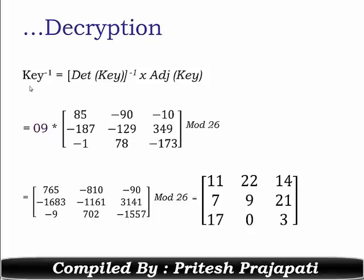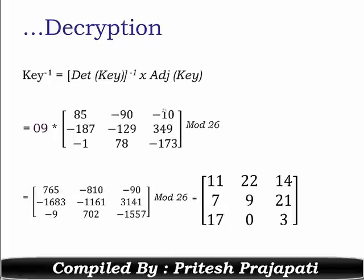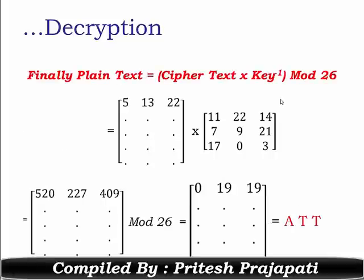The key inverse equals determinant of key inverse into adjoint of key. The determinant of key inverse equals 9, and the adjoint is the step four result matrix. Perform scalar multiplication to get the values, then apply mod 26 to get the key inverse matrix that will be used for decryption.